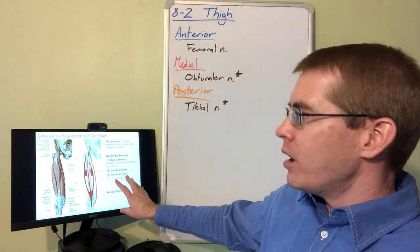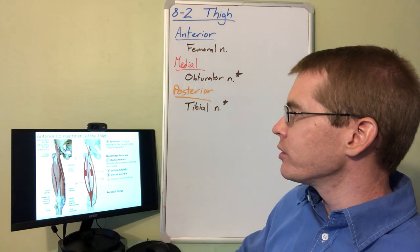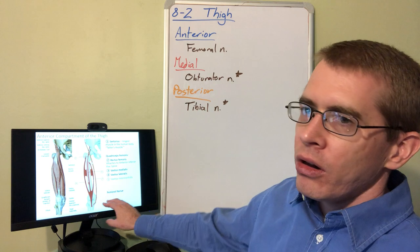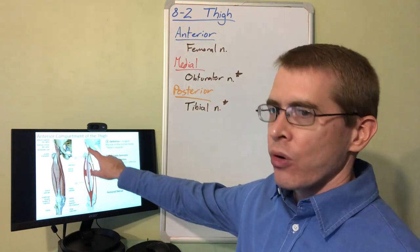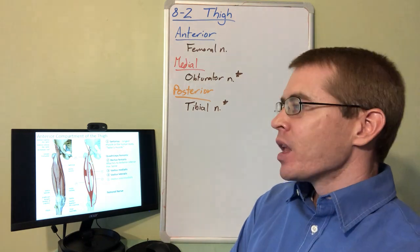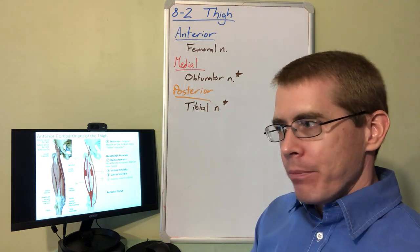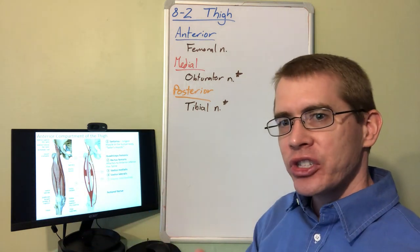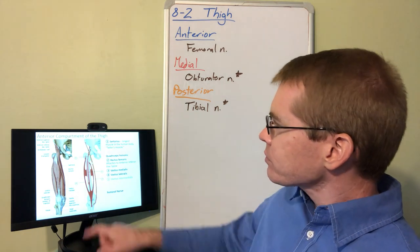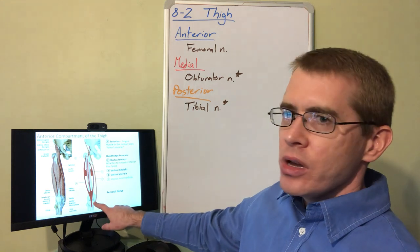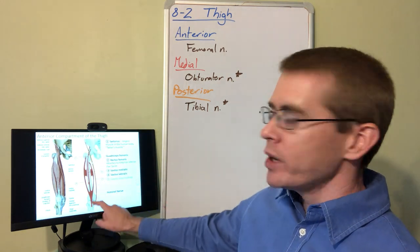First, the anterior compartment: the quadriceps femoris muscle and its four different muscle bellies. You can see three of them here on this image, all innervated by femoral nerve. One muscle outside of the quadriceps in this region is sartorius muscle, the longest muscle in the body. Named sartorius for, I believe, the Latin for tailor. Note how sartorius muscle is similar to biceps brachii muscle in the arm in that it crosses two joints: the hip joint and the knee joint.